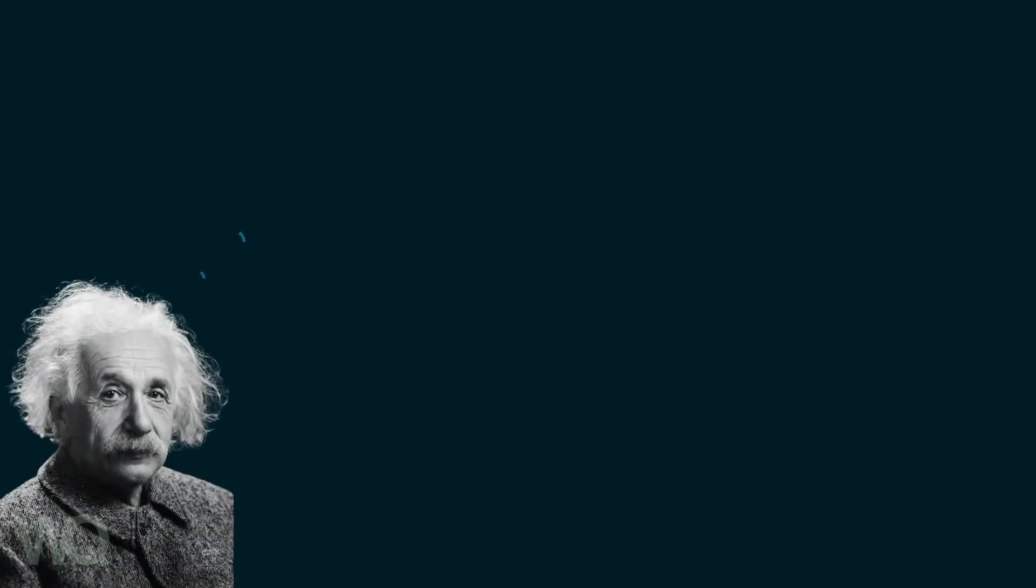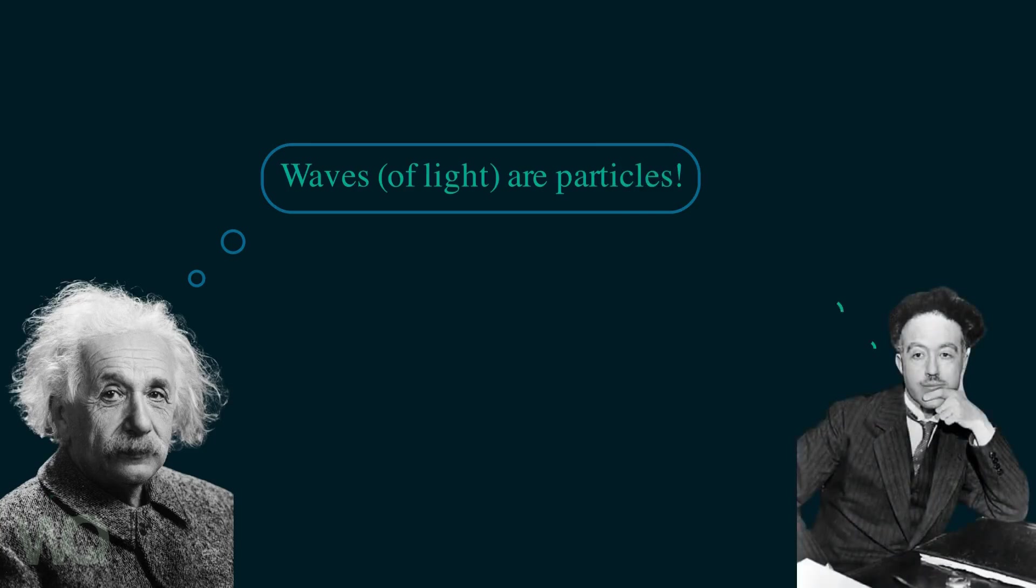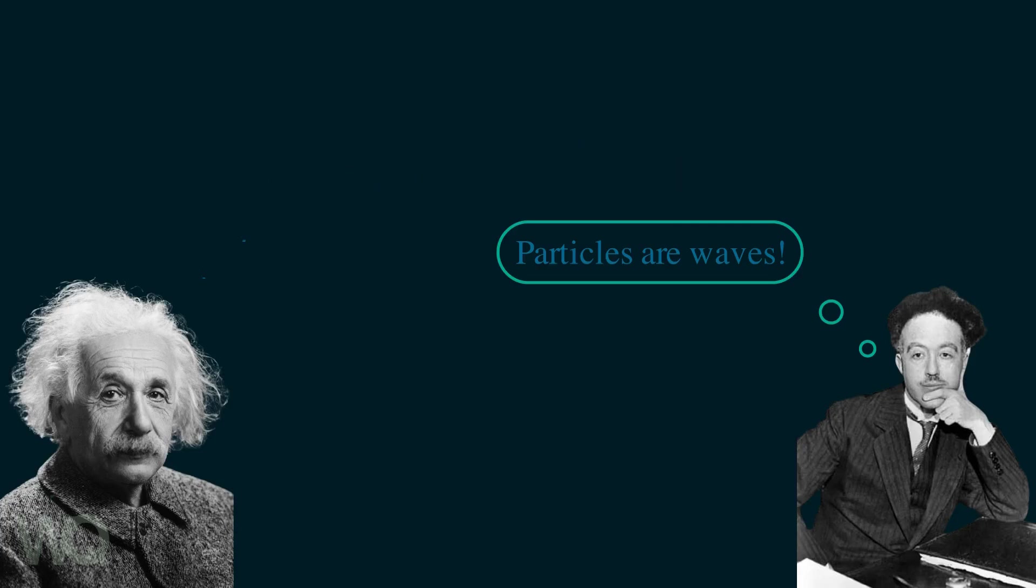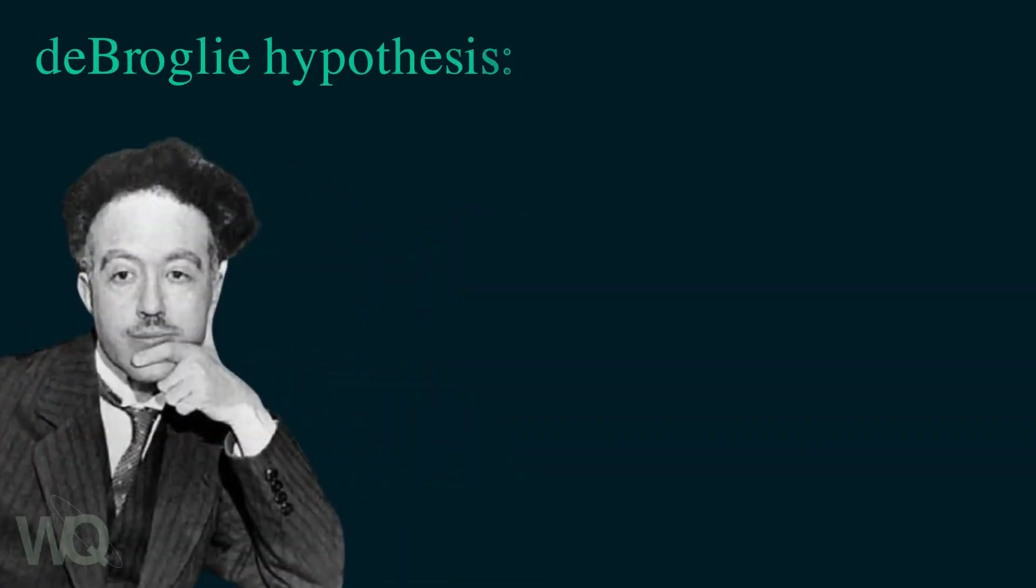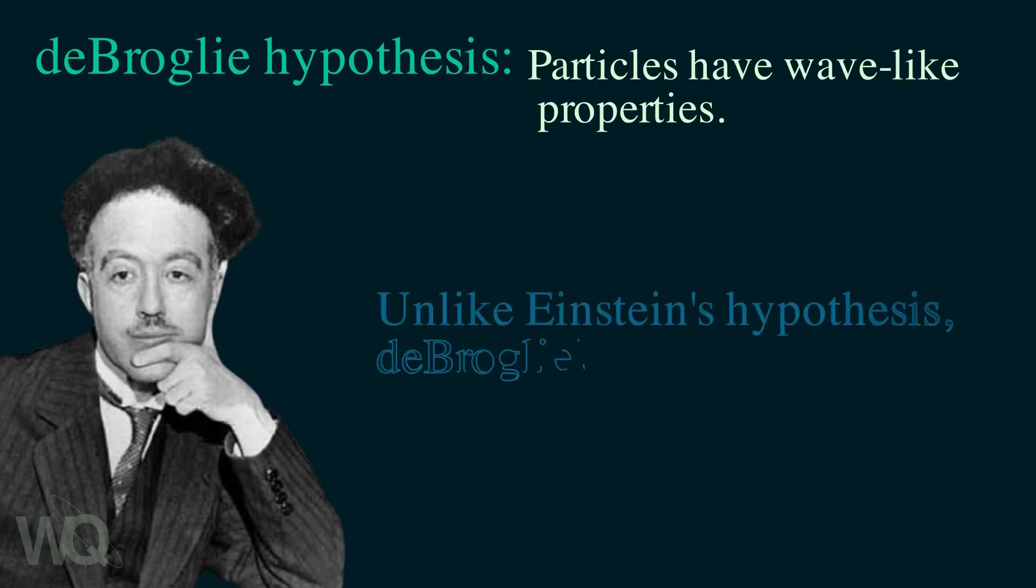Einstein said that light, which is known to consist of waves, could exhibit particle-like characteristics. And by associating a frequency with particles, de Broglie was essentially saying that particles can exhibit wave-like properties. Now the most important takeaway from this section is that the de Broglie hypothesis applies to all particles. It says that all particles exhibit some wave-like properties.